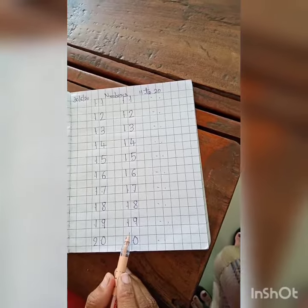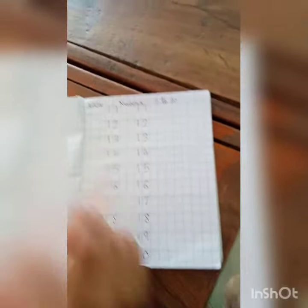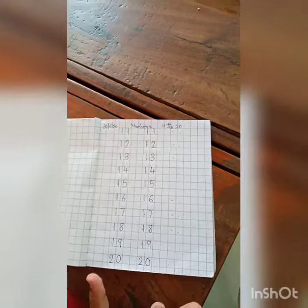Is this clear to you children? You do practice at home in your square line book. Okay children.